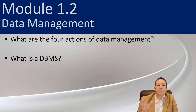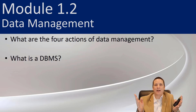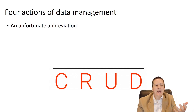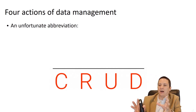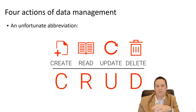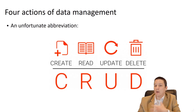In module 1.2 we're talking about some specific aspects of data management. When we talk about managing data, there are only four things we can do. Our database management system, or DBMS, facilitates these four actions. They go by the abbreviation CRUD — which stands for Create, Read, Update, and Delete. We can create new data, read data that exists, update data that exists, or delete it. That's really all we can do with data.